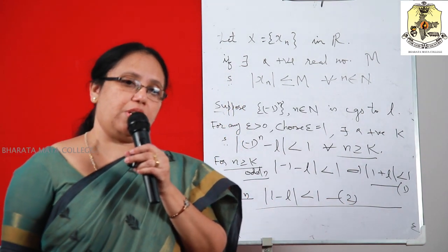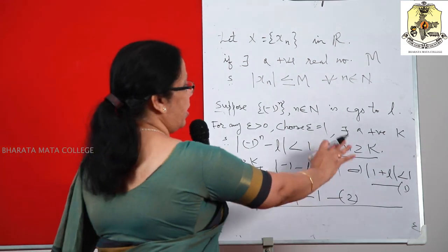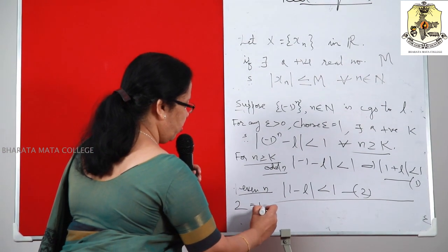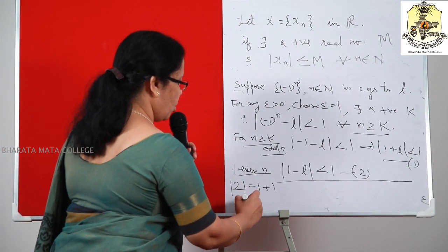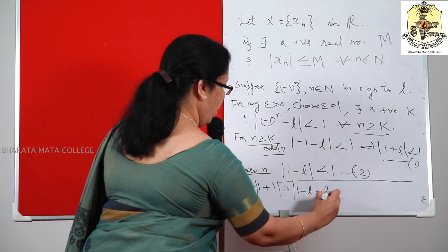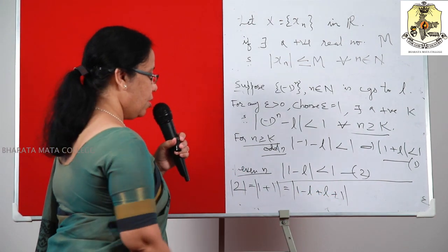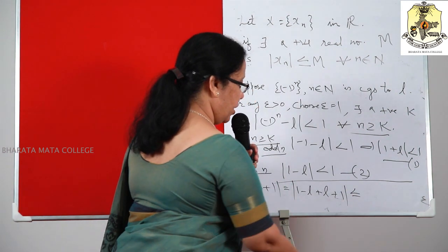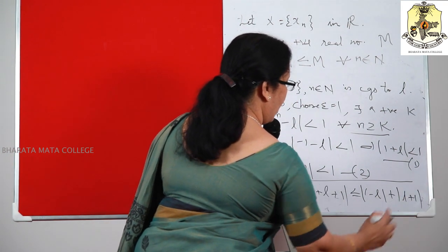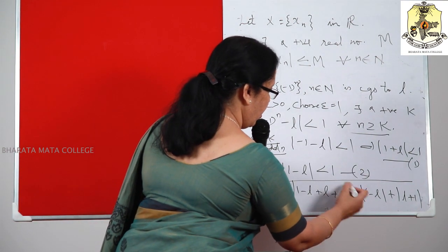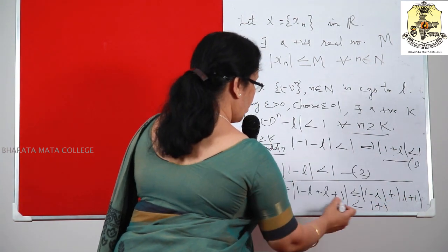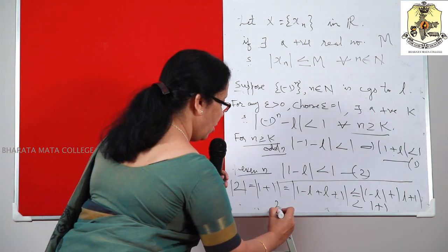We can show there does not exist a real number L satisfying both these inequalities. Consider the natural number 2: it can be written as 1 + 1, which equals |(1 - L) + (L + 1)|. Adding and subtracting L, by the triangle inequality this is less than or equal to |1 - L| plus |L + 1|. Using both inequalities, this is less than 1 + 1 = 2. So we get 2 < 2, which is absurd.